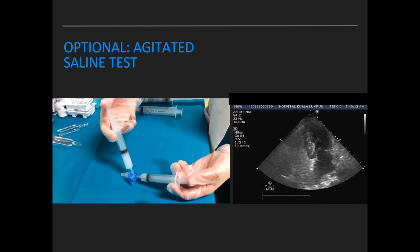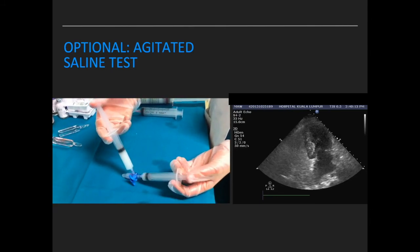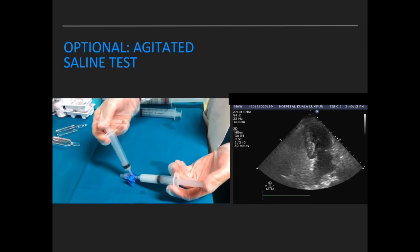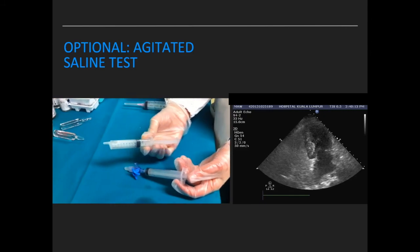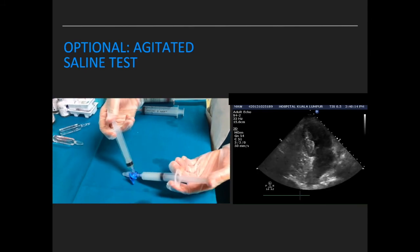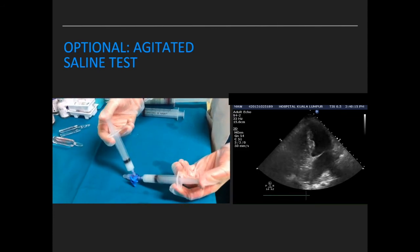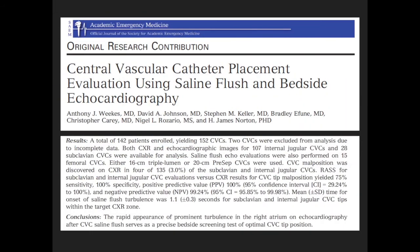Agitated saline testing is optional to confirm catheter placement. 9 ml of saline in a 10 cc syringe and 1 ml of air in another 10 cc syringe are agitated to produce microbubbles, then flushed through the central venous catheter. The rapid appearance of prominent turbulence in the right atrium on echo serves as a precise bedside screening test of optimal CVC tip position. The agitated saline test has 100% specificity and positive predictive value.